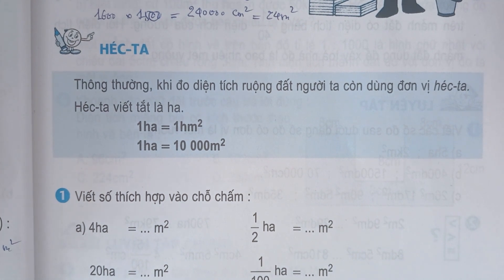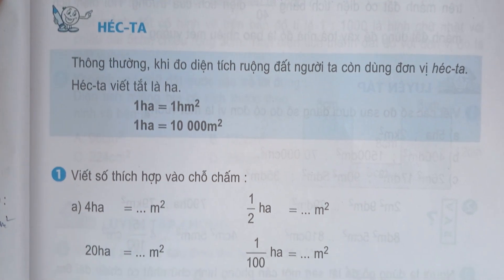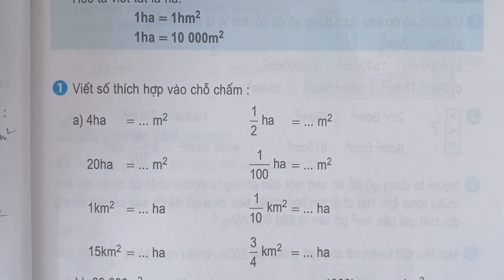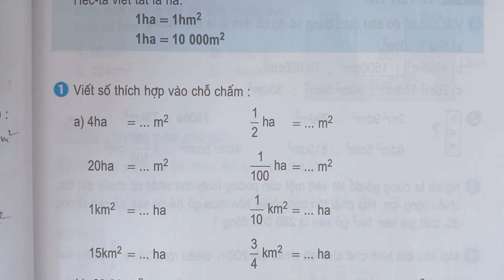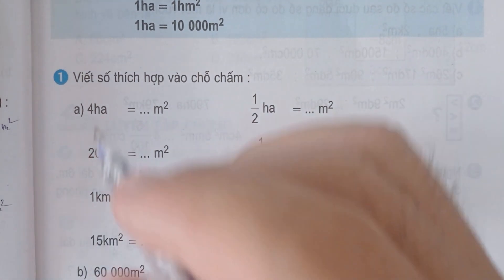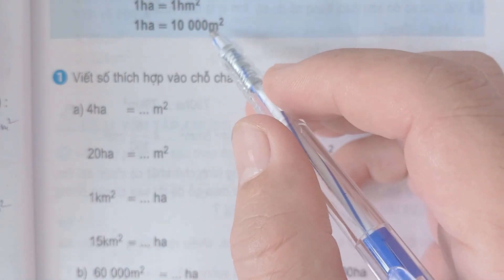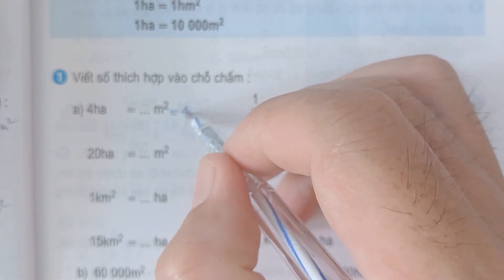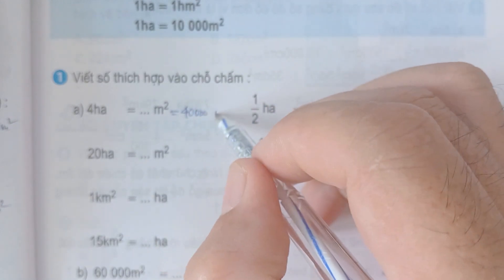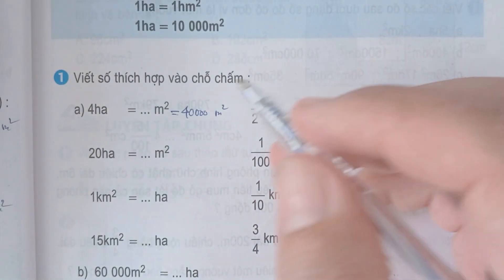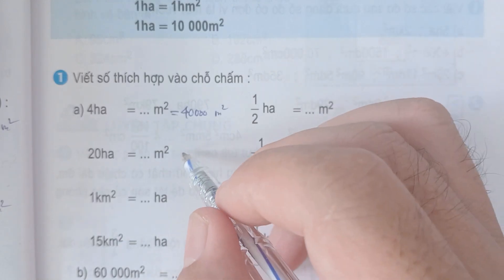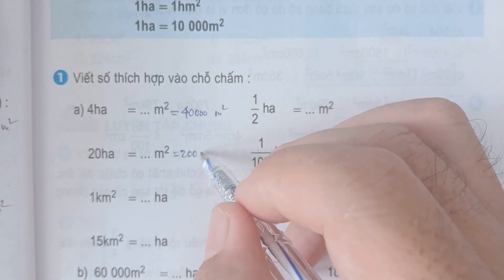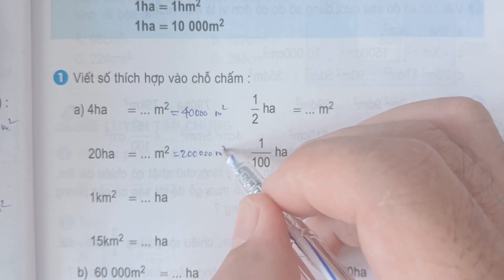1 HA bằng 1 héc-tô-mét vuông. 1 HA bằng 10.000 mét vuông. Câu số 1: Viết số thích hợp vào chỗ chấm. 1 HA sẽ bằng 10.000 mét vuông, 4 HA sẽ bằng 40.000 mét vuông.